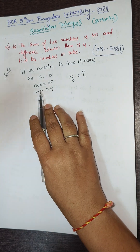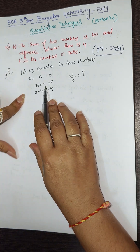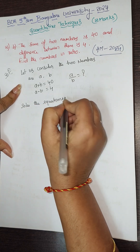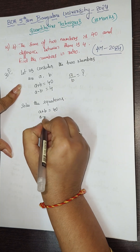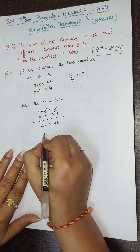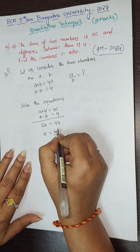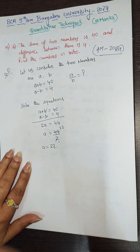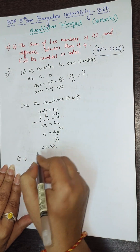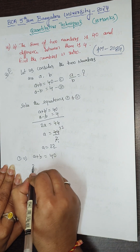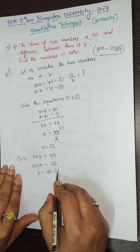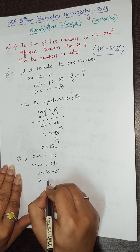To find a and b, we solve the linear equations. Adding the two equations: a + b = 40 and a - b = 4. The b terms cancel, giving 2a = 44, so a = 22. Substituting into the first equation: 22 + b = 40, so b = 40 - 22 = 18.